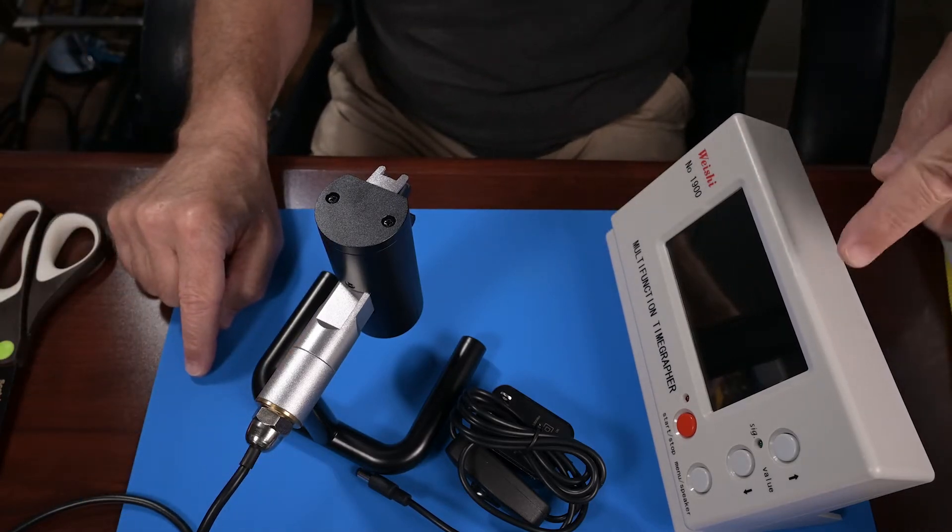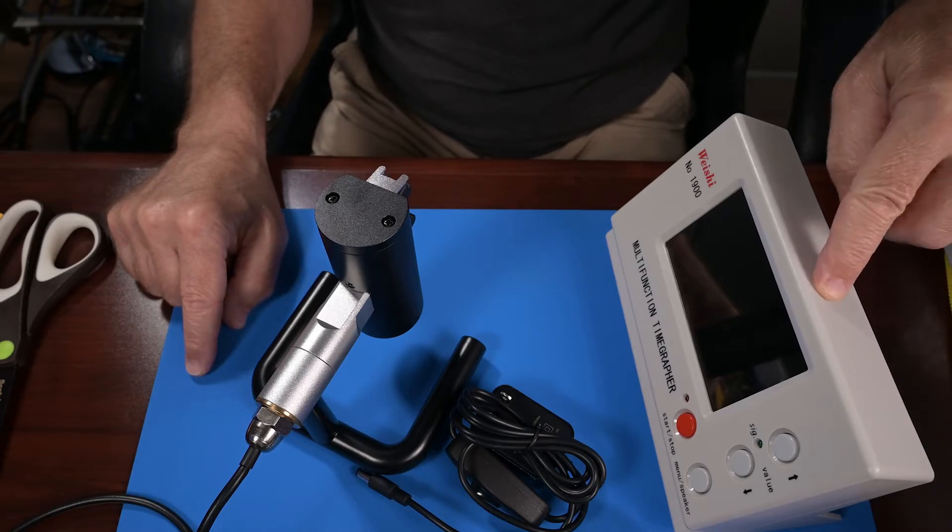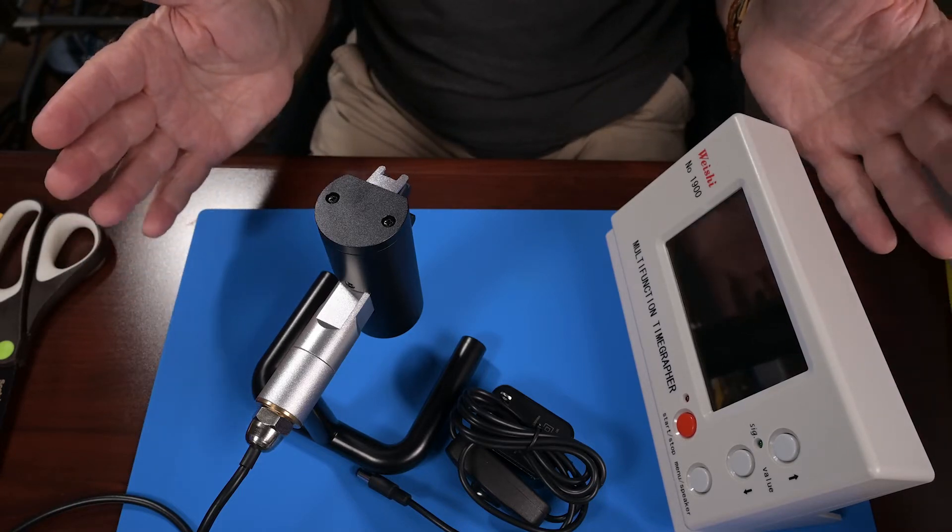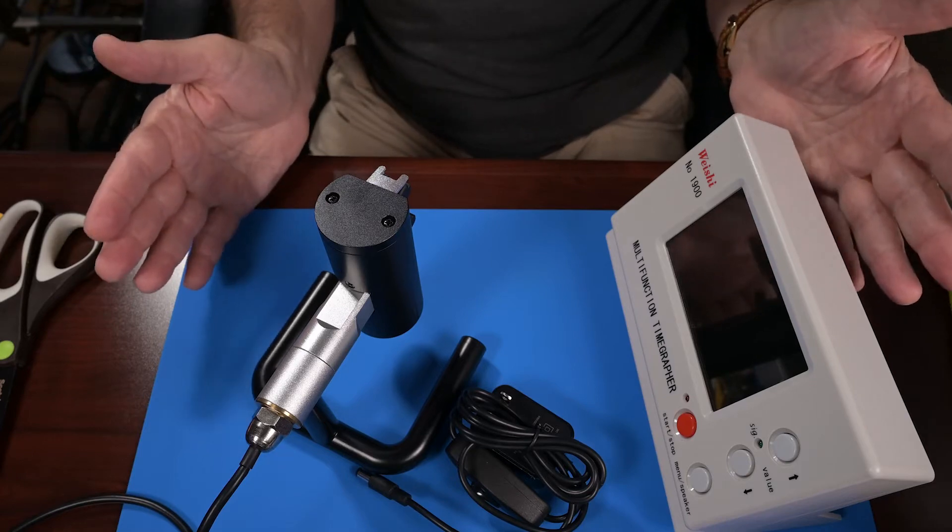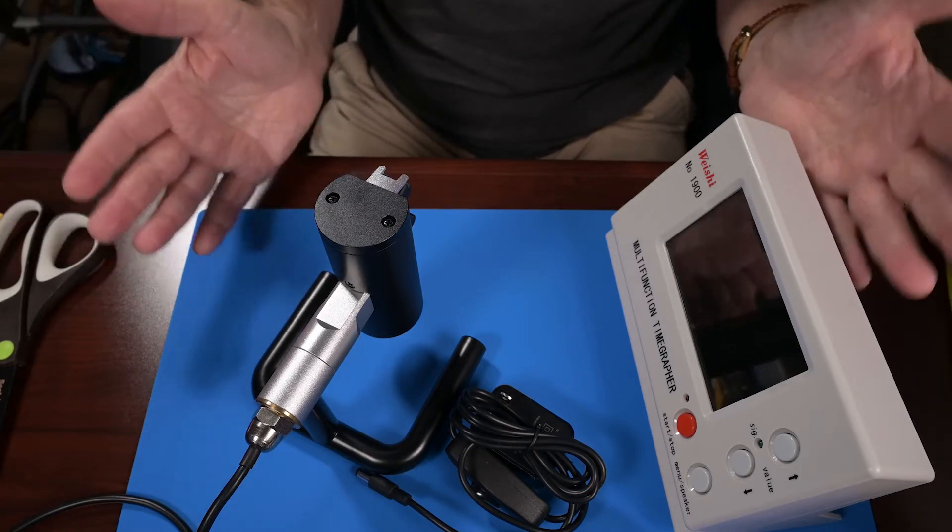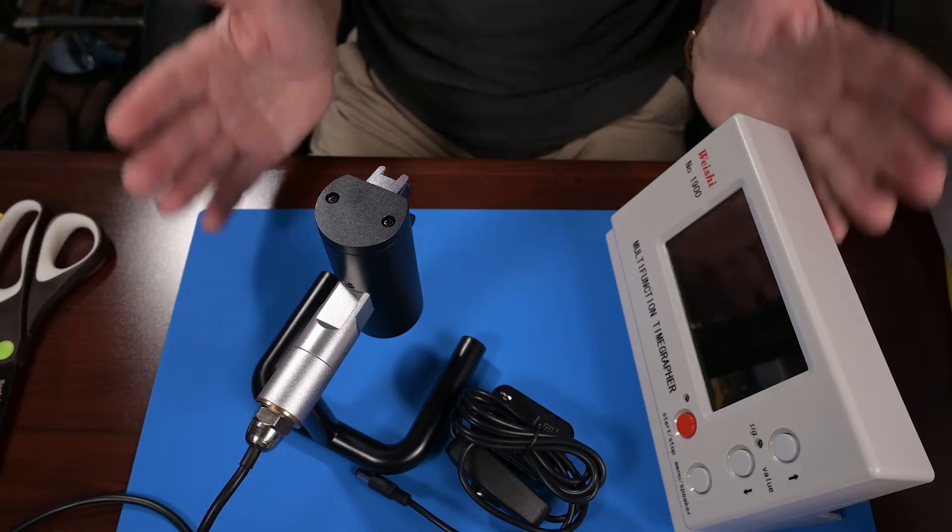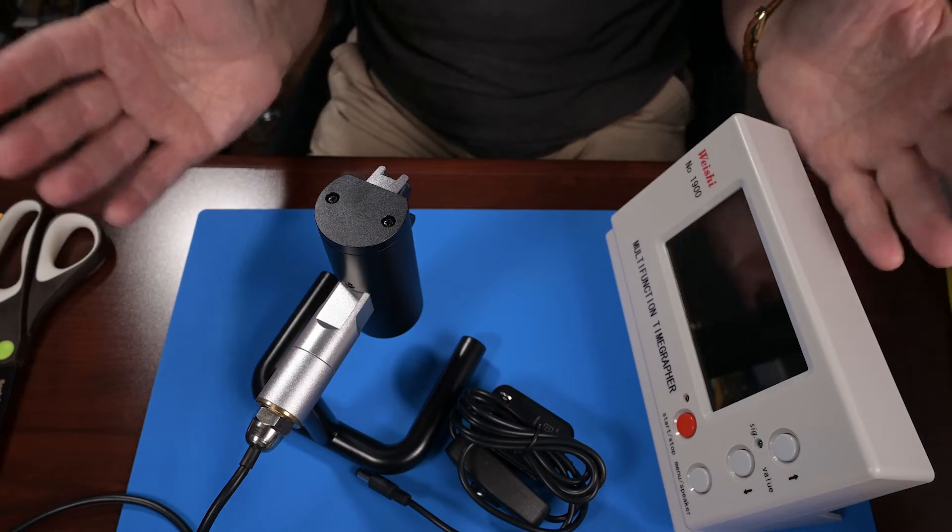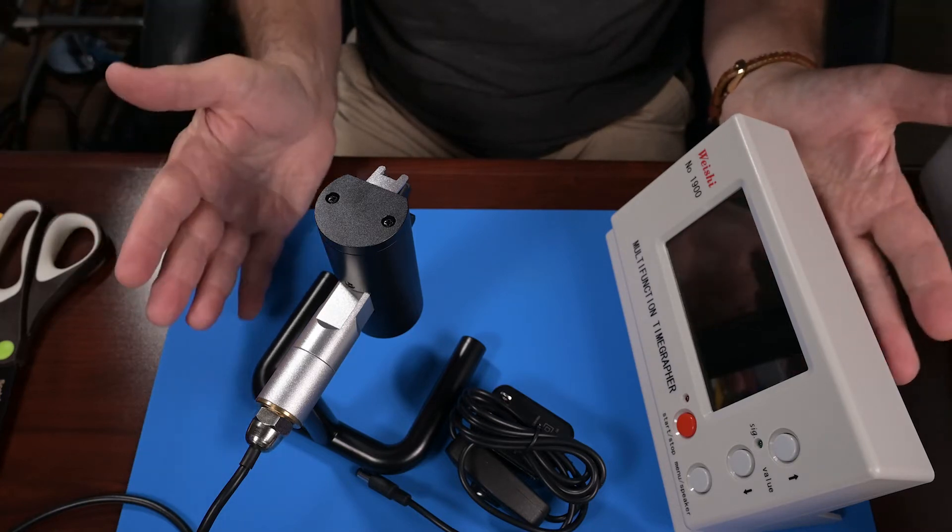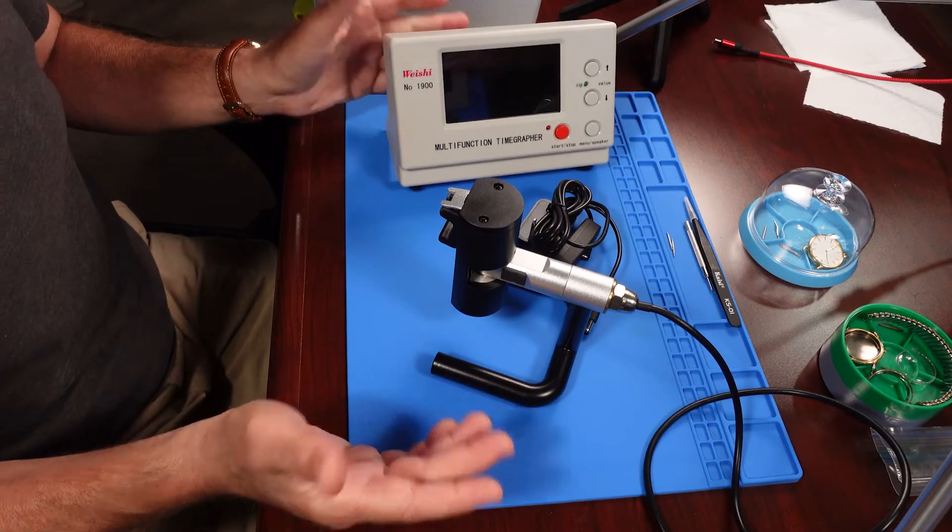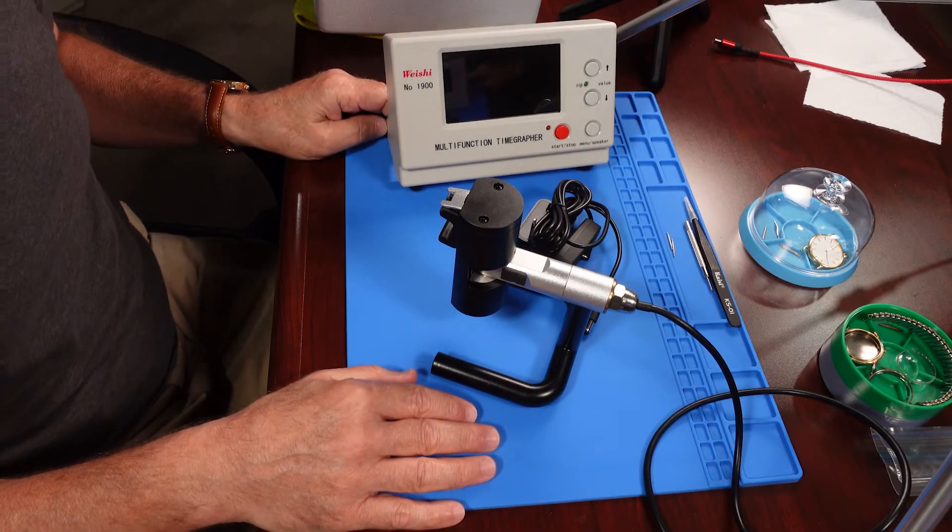There's a microphone here. This microphone plugs into this central control unit and it listens to the ticks and the tocks of the watch to give you the overall health and let you know whether or not your watch is running strong and whether it's keeping good time. So let's plug this thing in and let's fire it up and let's give it a try.